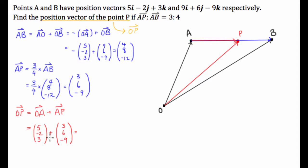So, 5 plus 3 is 8. Negative 2 plus 6 is 4. Negative 3 minus 9 is negative 6.